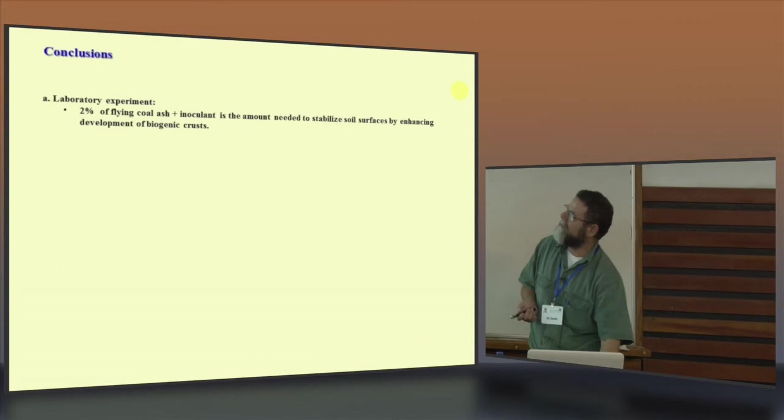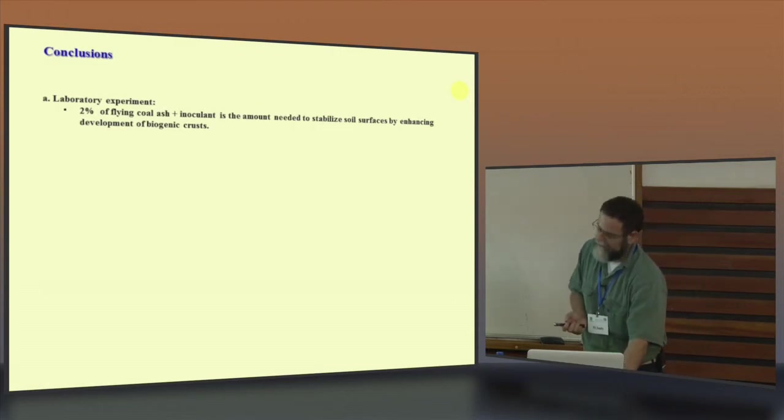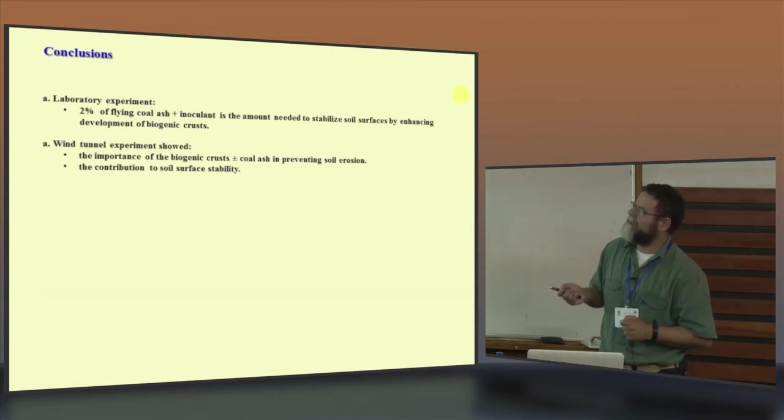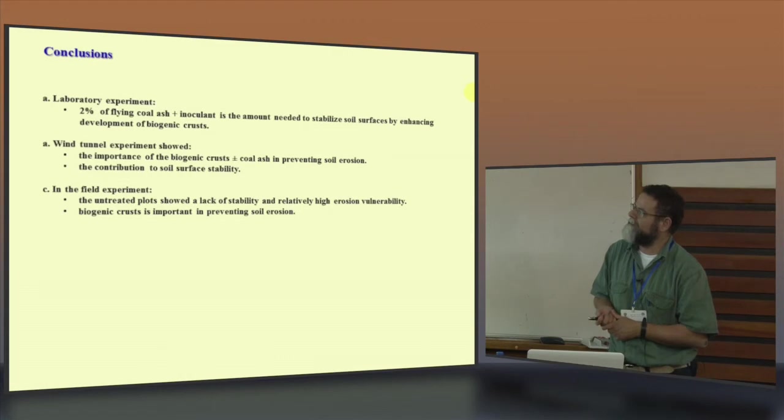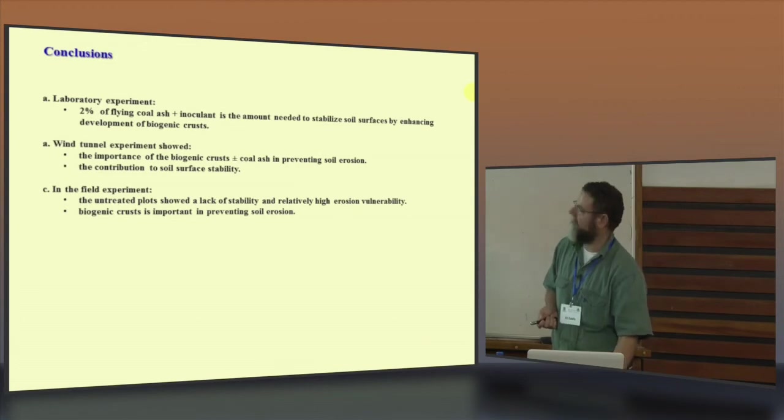So let's go to see the conclusion from all this. In the laboratory experiment, the 2% fly ash plus inoculant is the amount needed to stabilize the soil surface by enhancing development of biogenic crust. In the wind tunnel experiment, the importance of the biogenic crust plus minus coal ash in preventing soil erosion. The contribution to the soil stability, to the surface stability. In the field experiment, the untreated plot showed the lack of stability compared to the one with the biogenic. And the biogenic improved the prevention of soil erosion.